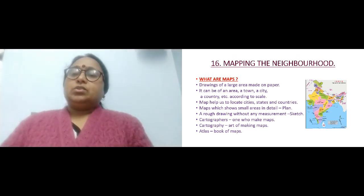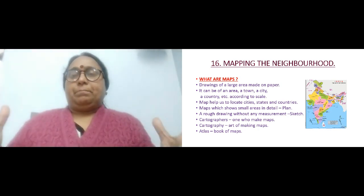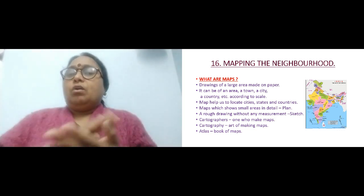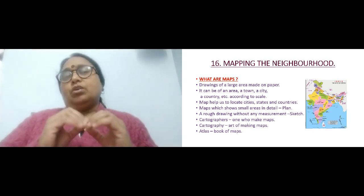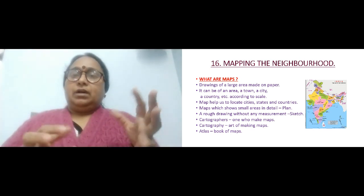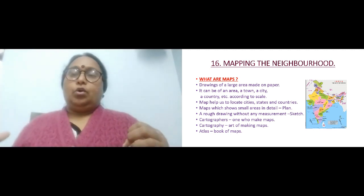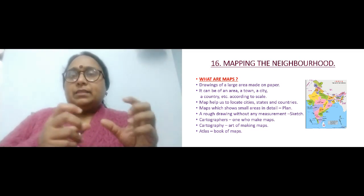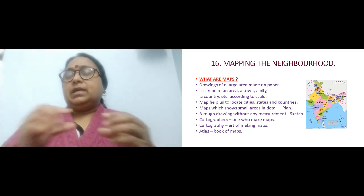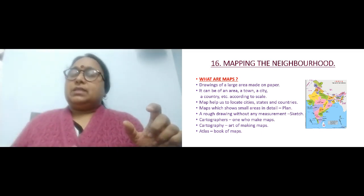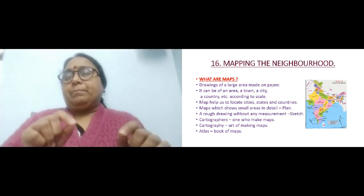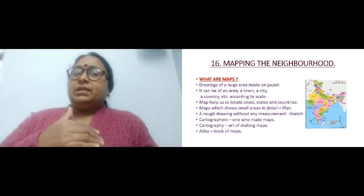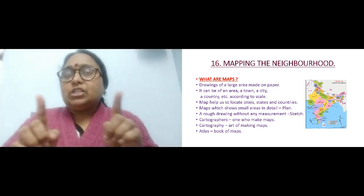A map is a drawing of a large area on a small piece of paper, and mostly a map is drawn to scale. If the distance from your school to your home is one kilometer, you can't draw a map of one kilometer. Instead, you convert one kilometer into centimeters — for example, one kilometer equals one centimeter on the map — and then you draw it to scale.